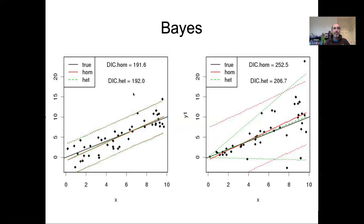In the Bayesian version, I repeated the same calculations using DIC and found very similar results. The DICs are very similar between homoscedastic and heteroscedastic models when there is no change in variance, with a penalty to the heteroscedastic for including the unnecessary additional parameter. By contrast, in the heteroscedastic dataset, model selection supports the additional complexity and correctly captures the difference in variability depending on x.